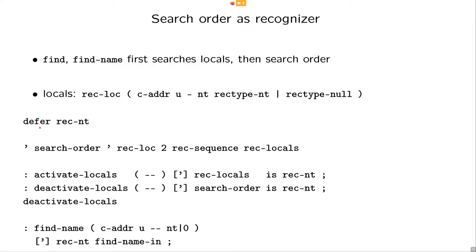We make, we defer rec-NT. We make that a deferred word. And we have now a recognizer sequence that contains the search order on the bottom and rec-local, so that this locals recognizer on the top. And we can activate the locals by putting this recognizer sequence into rec-NT or we can deactivate the locals by putting the search order without locals into rec-NT.